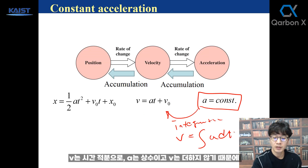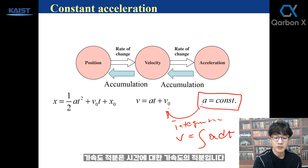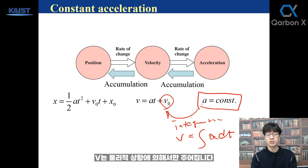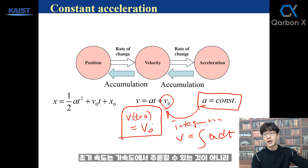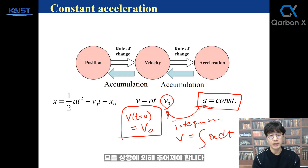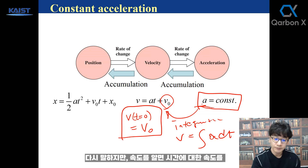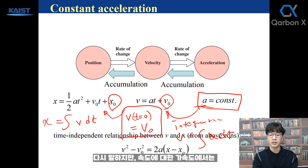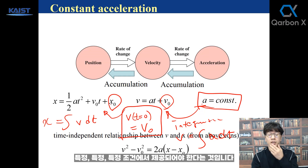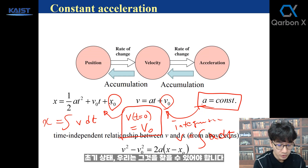Integrating constant acceleration a with respect to time gives v equals at plus v-naught, where v-naught is the initial velocity given by the physical situation — it cannot be deduced from acceleration alone. Once we know velocity, we can find position vector by integrating velocity with respect to time. Again, x-naught, the initial position, cannot be found from acceleration or velocity — it must be given as an initial condition.